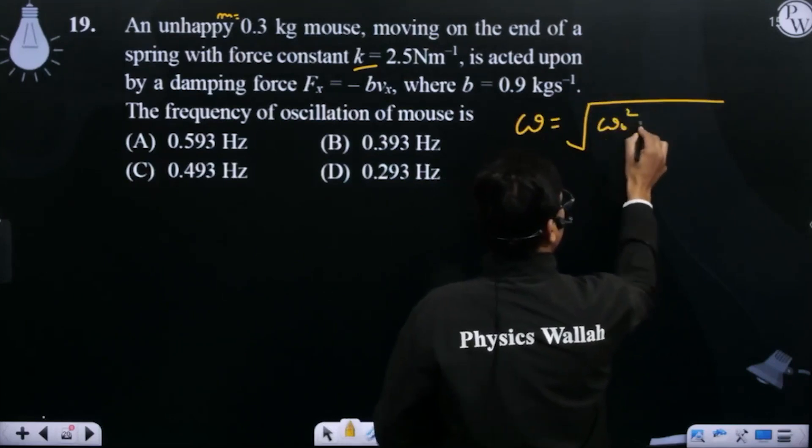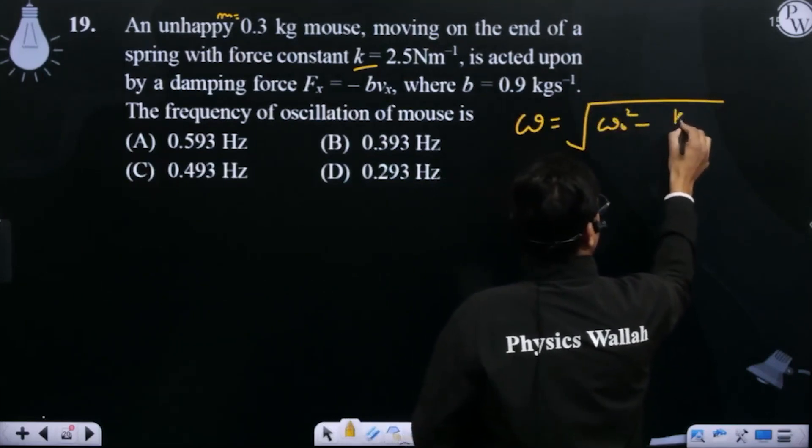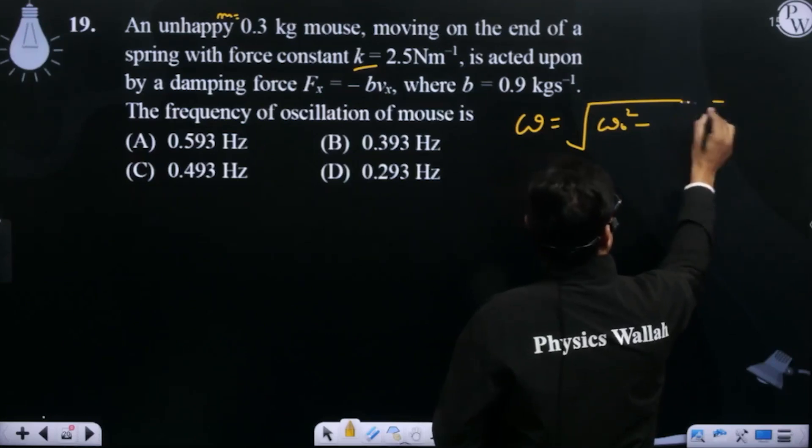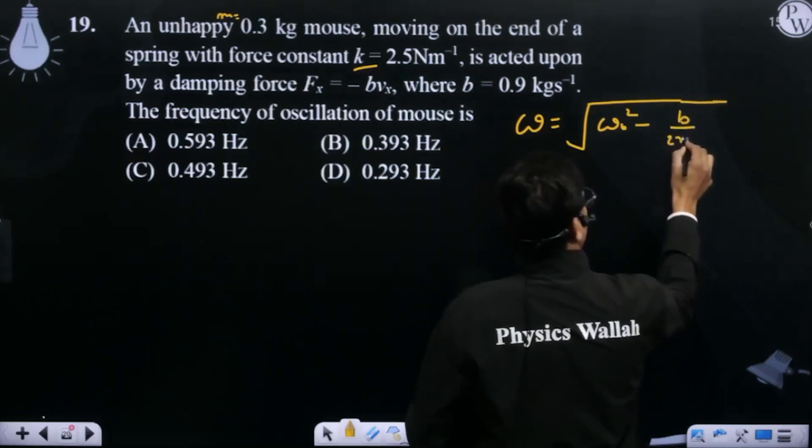omega naught squared minus k by m... sorry, B upon 2m squared.